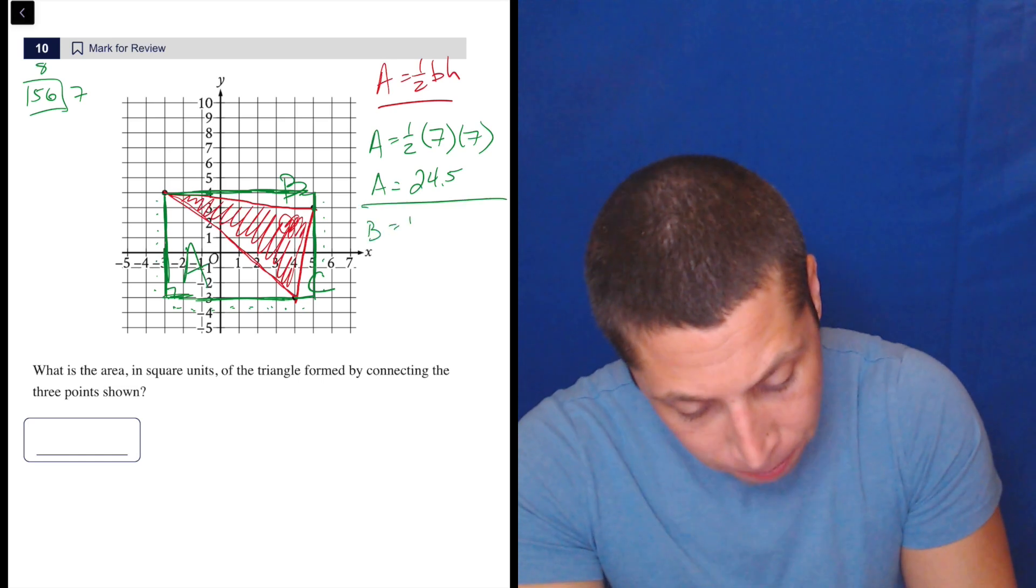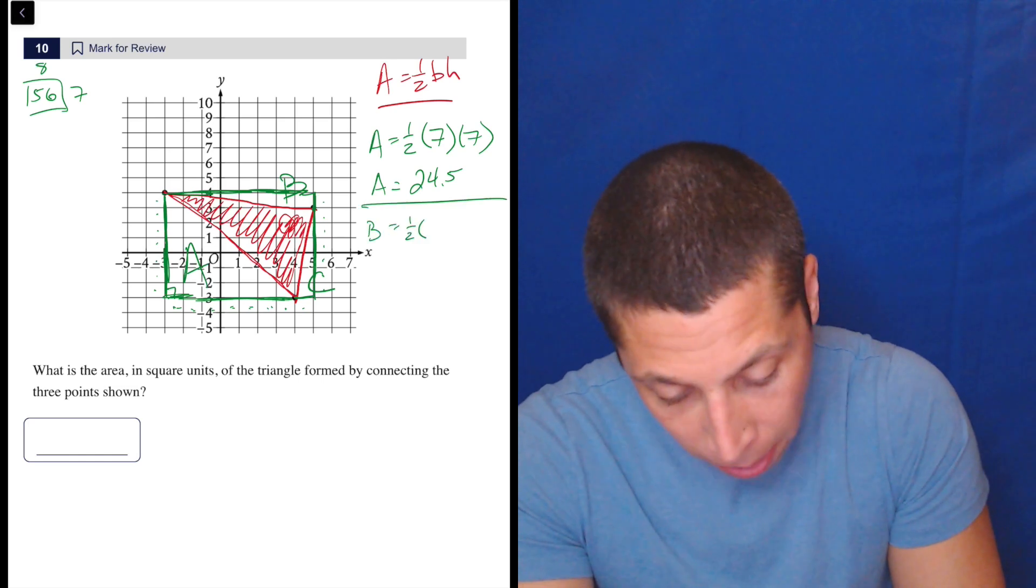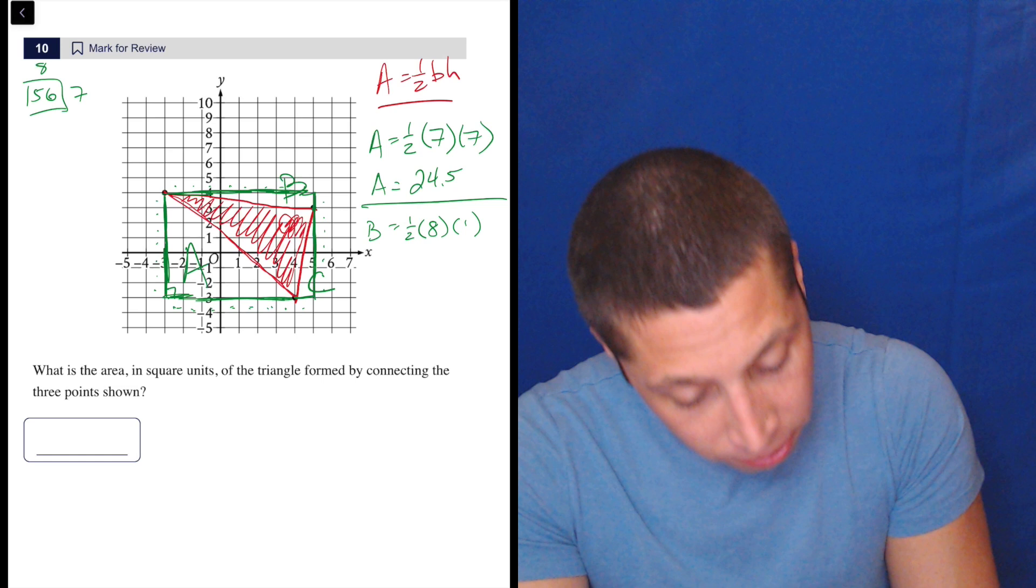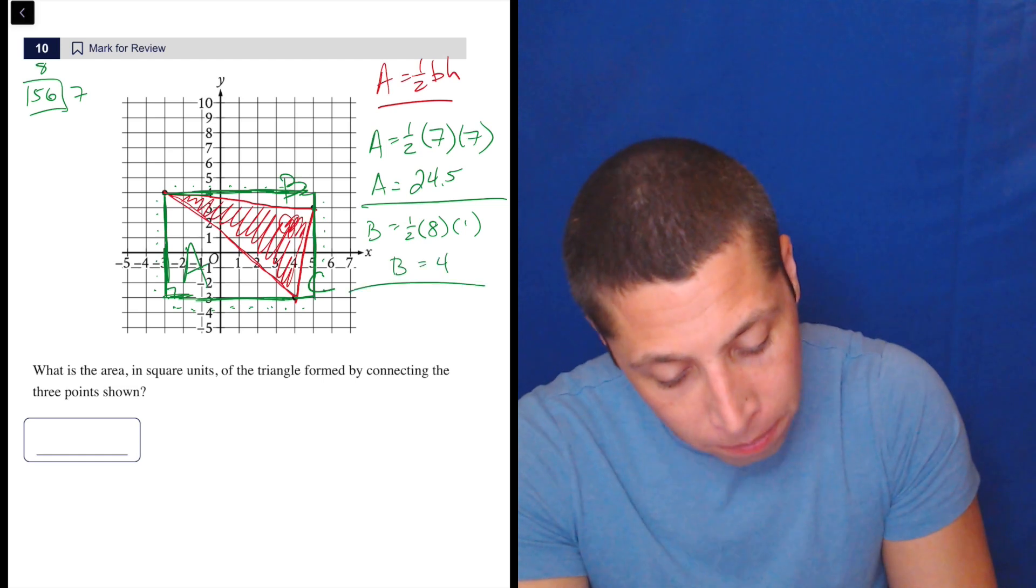Let's do B. So B is also one half base times height. So this time the base is, I'm going to go along the top. I think that's eight, one, two, three, four, five, six, seven, eight. And the height is one. So half of eight, that's nice. That's four.